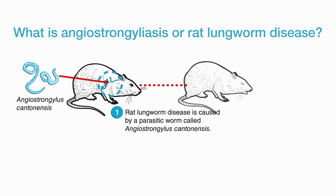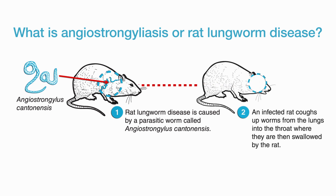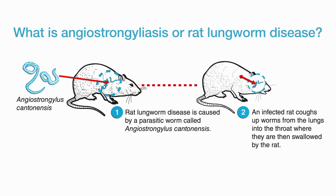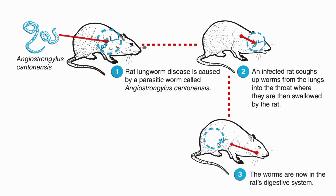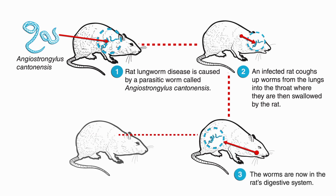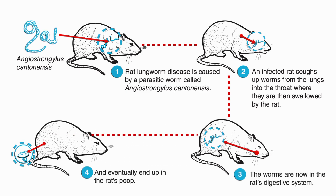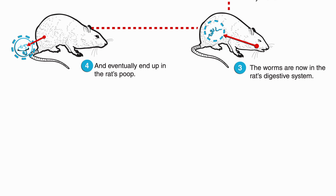An infected rat coughs up worms from the lungs into the throat, where they are then swallowed by the rat. The worms are now in the rat's digestive system and eventually end up in the rat's poop.